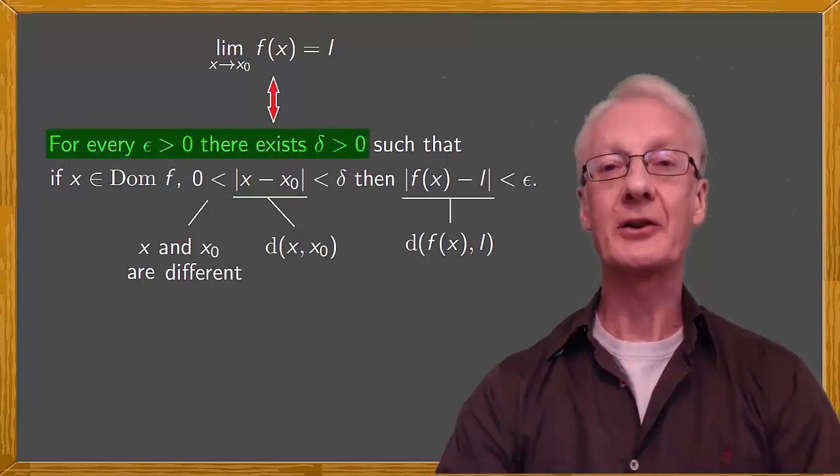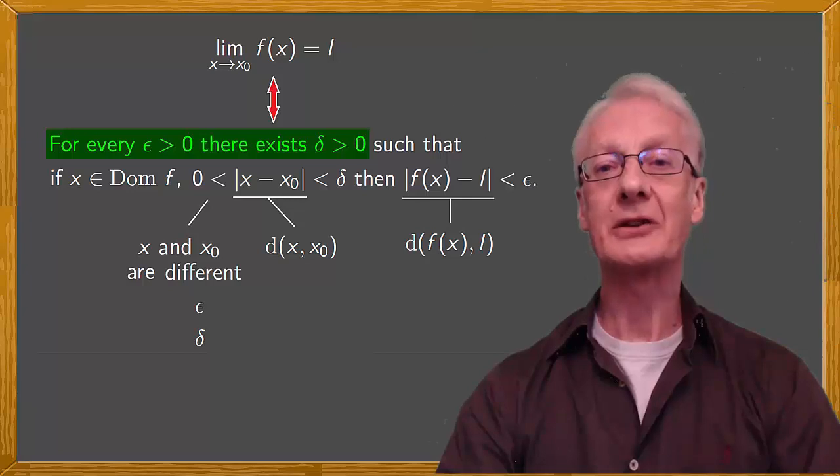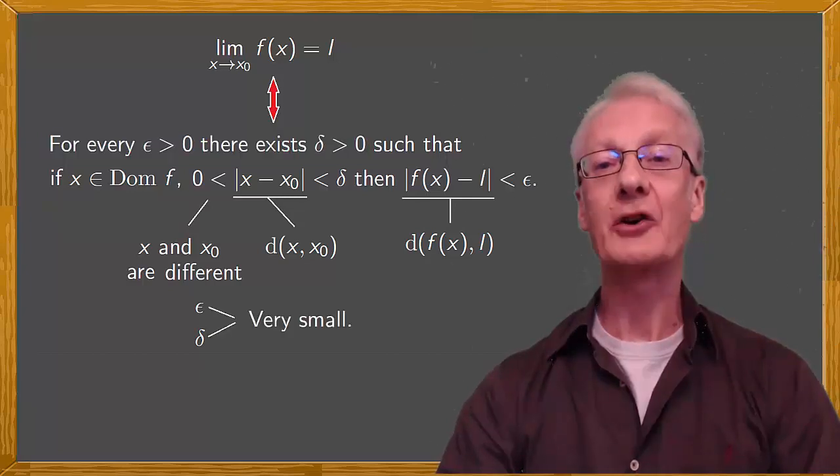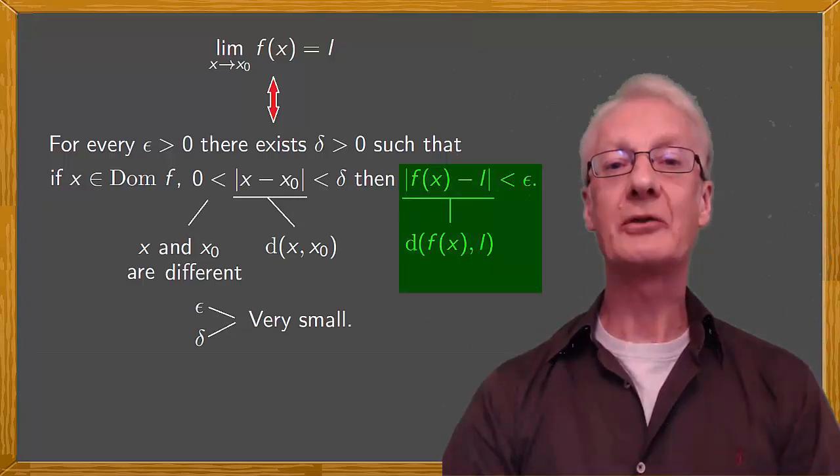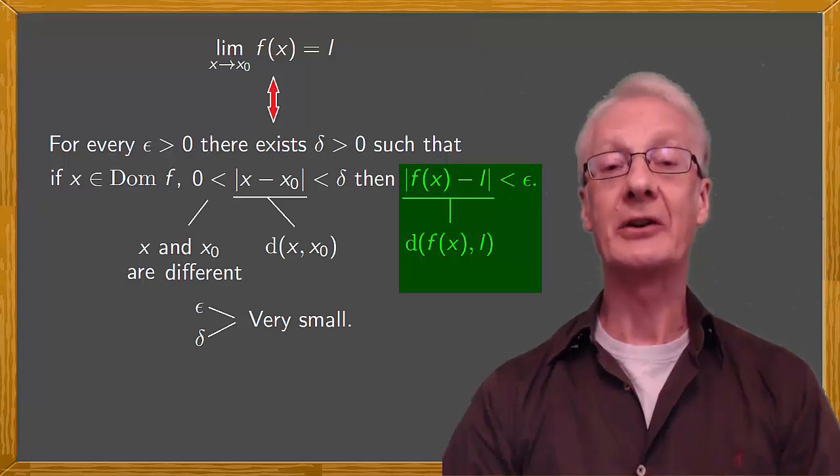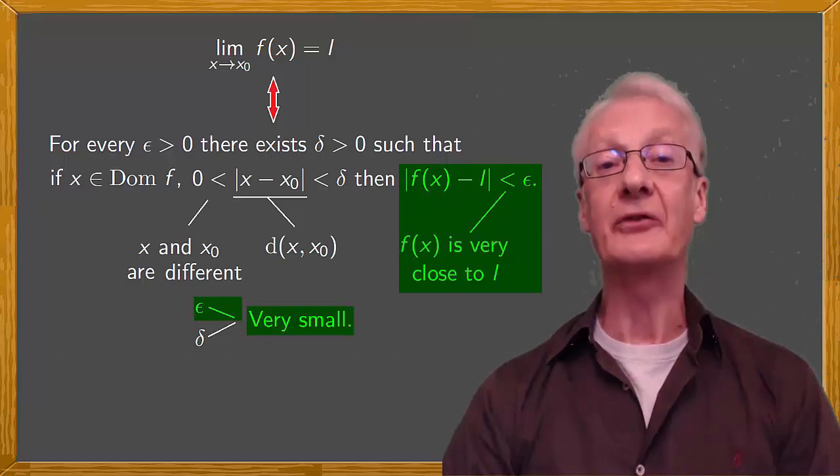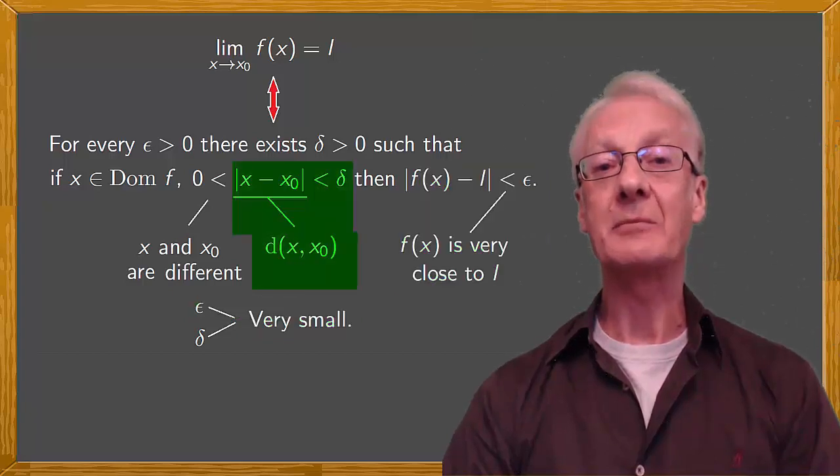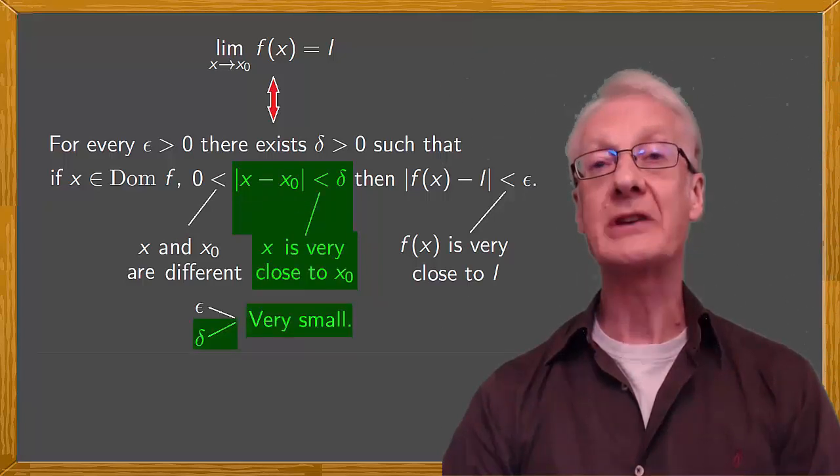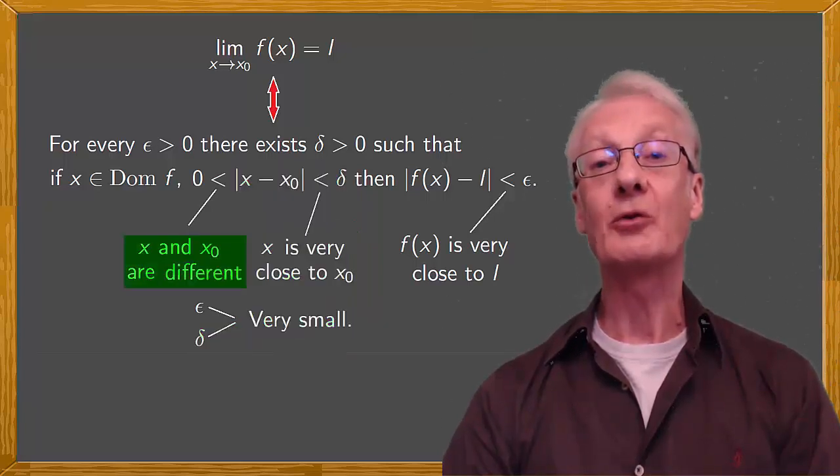For each epsilon there's a delta. Epsilon and delta are just very tiny quantities. Now let's put our earlier definition into everyday language. The absolute value of f(x) minus L is less than epsilon means that the distance from f(x) to L is very small. In other words that f(x) is very close to L. It's the same for the absolute value of x minus x0 is less than delta. x is very close to x0 without being quite equal to it.